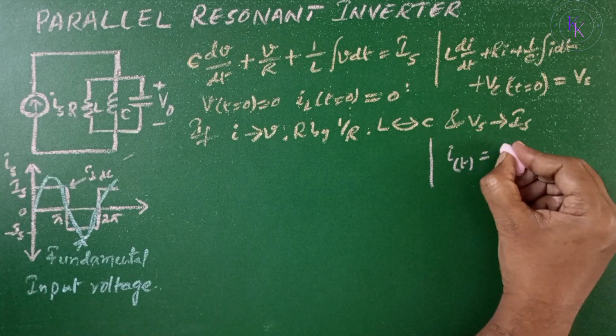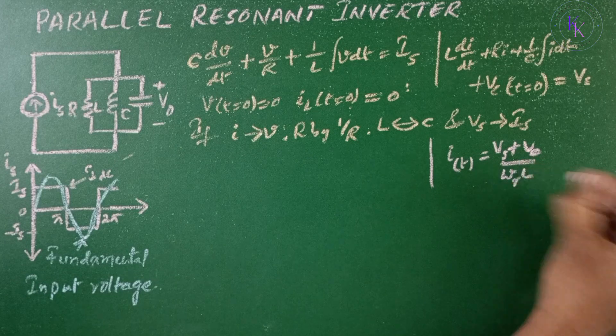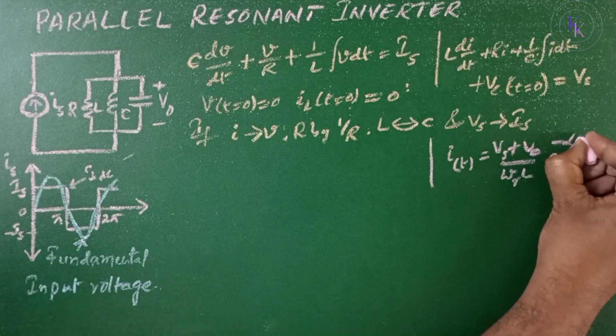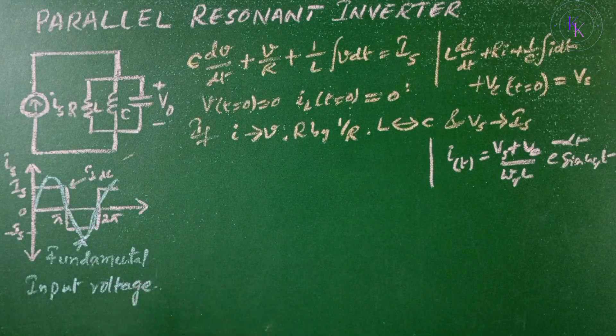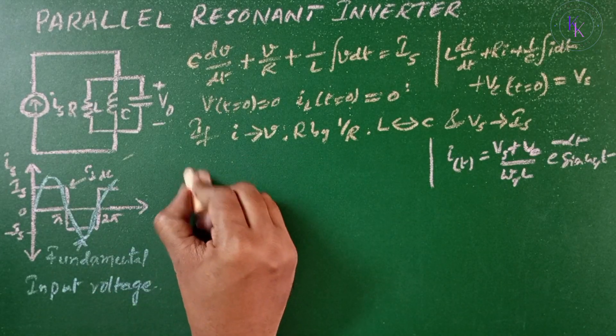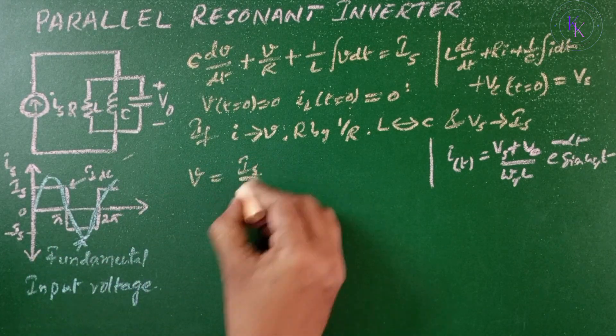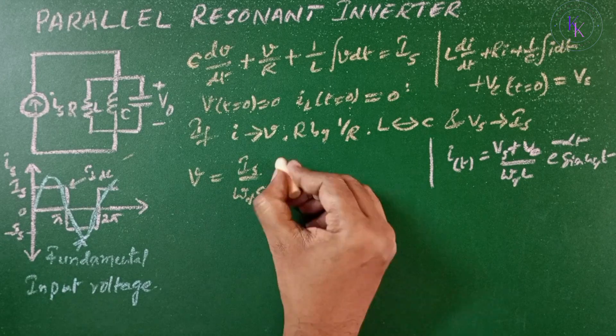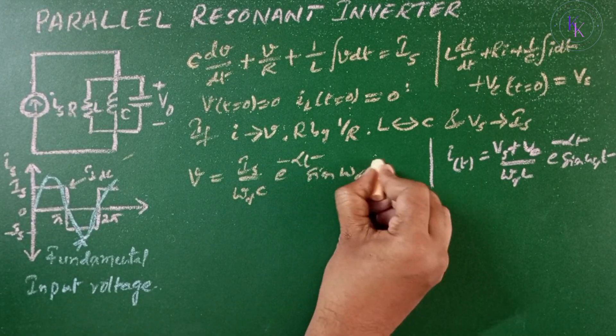In series inverter we got I(t) equals (Vs + Vc)/(ωR·L) e^(-αt) sin(ωRt). If I replace these values in the equation, I get the voltage for parallel resonant inverter equals Is/(ωR·C) e^(-αt) sin(ωRt).